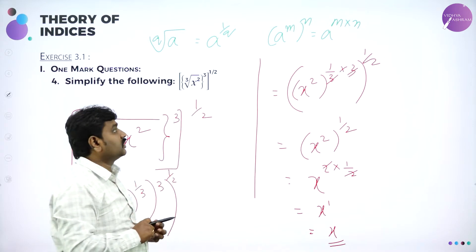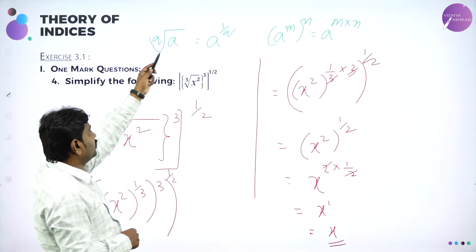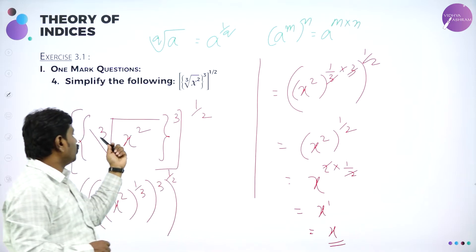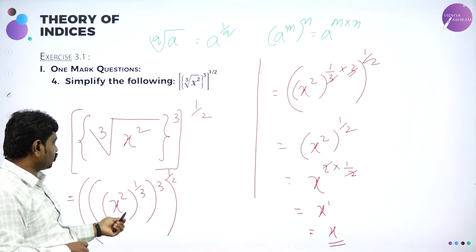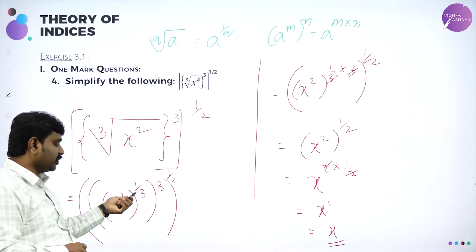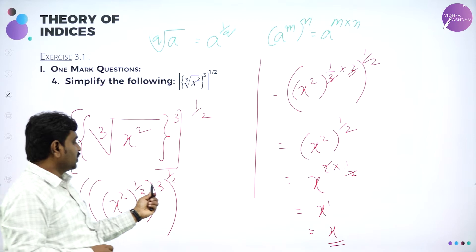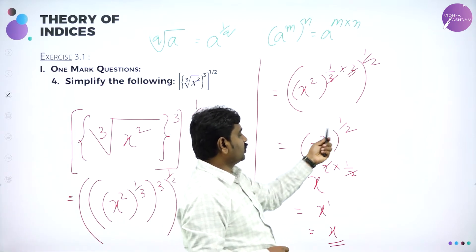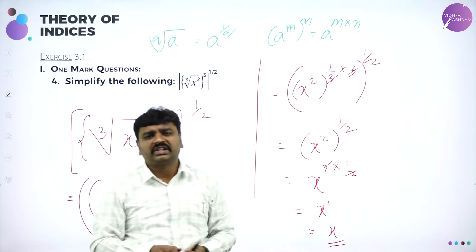We used two formats: first, qth root of a equals a power 1 by q, so cube root of x square is written as x square power 1 by 3. Then multiplying, 3 cancels and we have x square whole squared. Multiplying again, 2 cancels and we are left with x power 1, that is x.